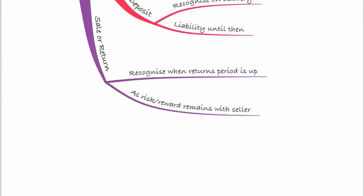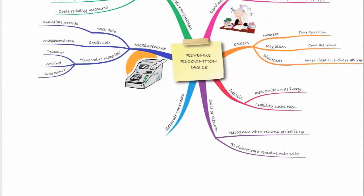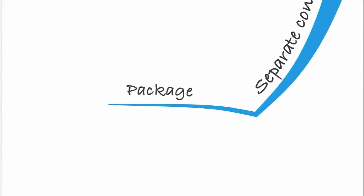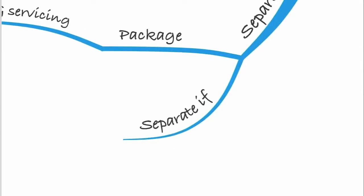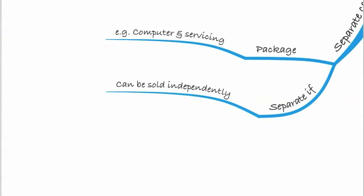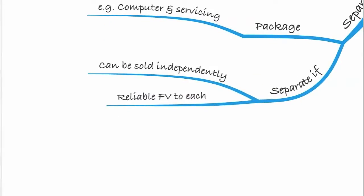Lastly, what if a contract includes both goods and services — for example, a computer with an agreement to service it for a number of years, with an upfront payment? We need to separate it out: split it into the goods part and the services part, and recognise each accordingly. Goods are recognised on delivery; services by stage of completion. If paid upfront, some income will be deferred until the contract is carried out. Separate it if each component can be sold independently with a reliable fair value.